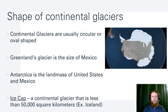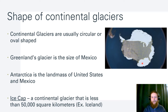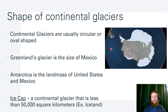Continental glaciers are usually circular or oval shaped. The glacier on Greenland is the size of Mexico, and Antarctica is the United States and Mexico combined. In this image, the United States is superimposed over Antarctica, and you can see there's a lot of space in Antarctica bigger than the continental 48 states. Expeditions going across it take people weeks — imagine doing that in freezing conditions with ice.